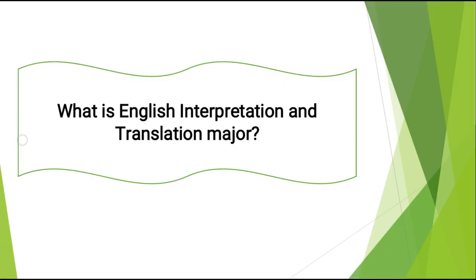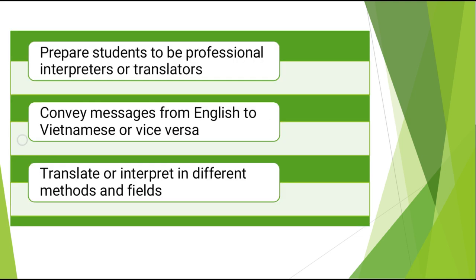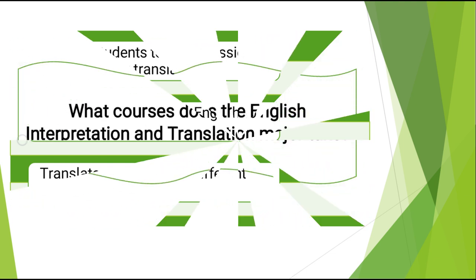What is the English Interpretation and Translation major? It is a program that prepares individuals to be professional interpreters or translators of documents and data files, either from English into Vietnamese or vice versa. It includes intensive instruction in one or more foreign languages, plus subjects such as single and multiple language interpretation, one or two-way interpretation, simultaneous interpretation, general and literary translation, business translation, and technical translation.